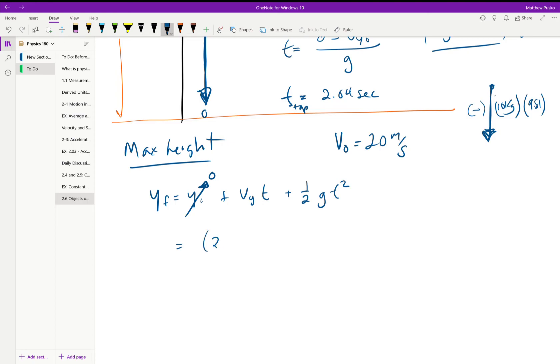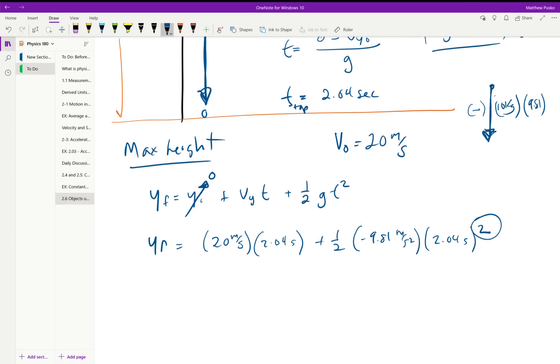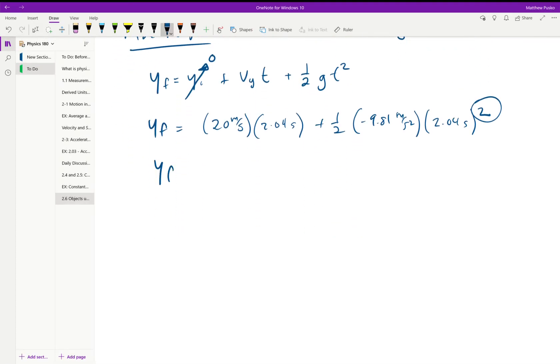And we can say that we just have the 20 meters per second as an initial velocity. We know the time now is 2.04 seconds and one half times negative 9.81 meters per second squared times 2.04 seconds, don't forget the squared. That's going to, sorry that's going to give me a y final of 20.4 meters. That's how far it went up.